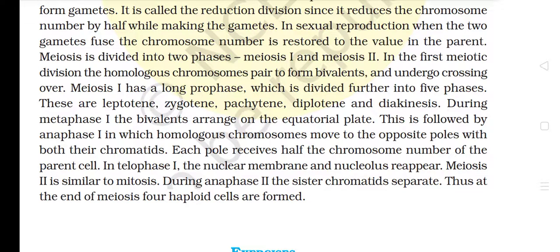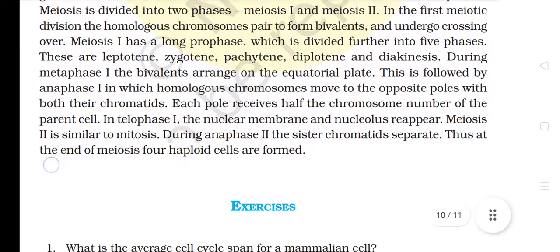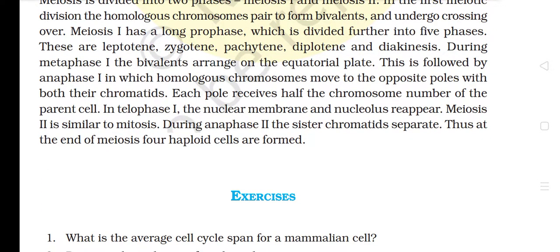In the first meiotic division, the homologous chromosomes pair to form bivalents and undergo crossing over. Meiosis I has a long prophase which is divided further into five phases: leptotene, zygotene, pachytene, diplotene, and diakinesis. During Metaphase I, the bivalents arrange on the equatorial plate. This is followed by Anaphase I in which homologous chromosomes move to the opposite poles with both their chromatids; each pole receives half the chromosome number of the parent cell. In Telophase I, the nuclear membrane and nucleolus reappear. Meiosis II is similar to mitosis; during Anaphase II, the sister chromatids separate. Thus, at the end of meiosis, four haploid cells are formed.